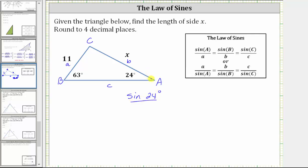...divided by the length of the opposite side, which is 11 units, must equal—and now for the second ratio, we will use angle B and the length of the opposite side—which will give us sine 63 degrees divided by the unknown length of x units.